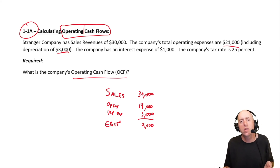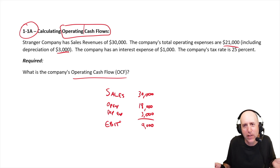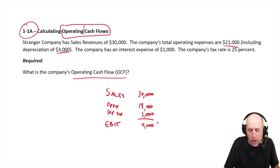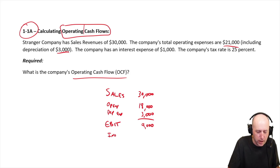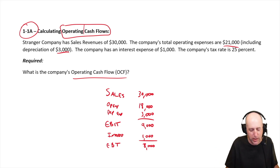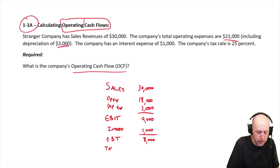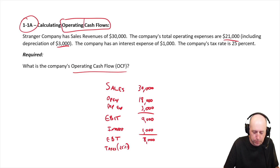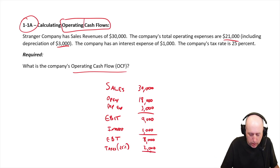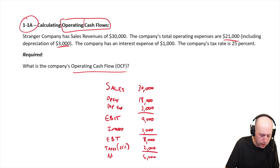That $9,000 is our EBIT — earnings before interest and tax. In accounting I'd call this operating income, but in a finance class we call it EBIT; they're essentially the same thing. Now subtract interest of $1,000 to get down to $8,000, which is earnings before tax. Taxes at 25% of $8,000 equal $2,000. That brings us to our bottom line — net income — this company made $6,000.